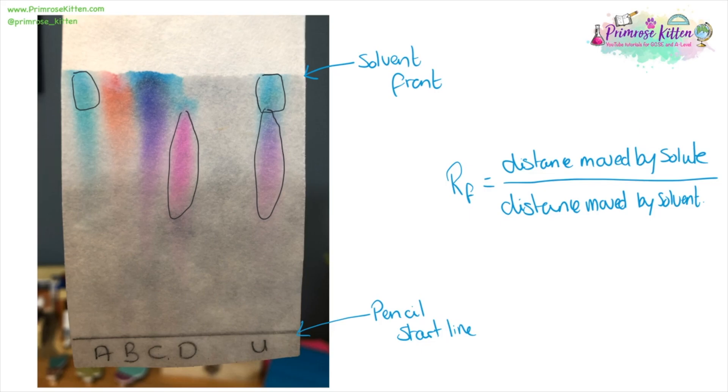So as well as matching up the spots to see what it looks like, we can also work out something called the RF value. This is the distance moved by the spot divided by the distance moved by the solvent. The solute is the bit that's dissolved in the solvent, that's the spot that you started with.